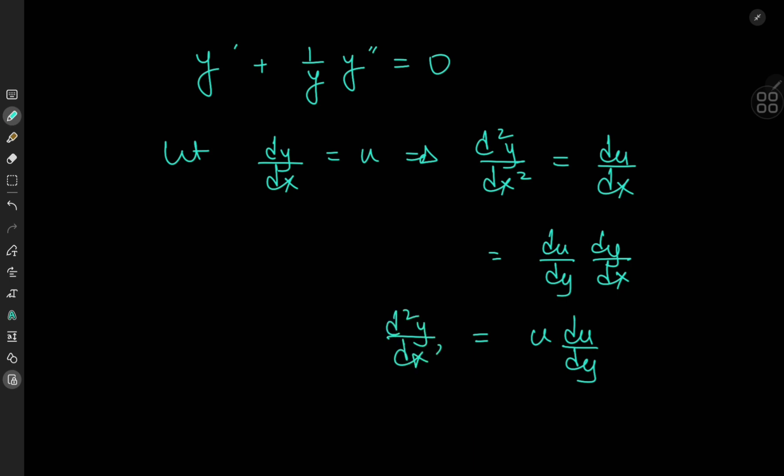So we have u times du by dy equal to the second derivative of y with respect to x. And that means our transformed differential equation is now y prime being written as u plus 1 by y times u times du by dy equal to 0.